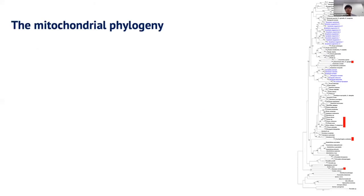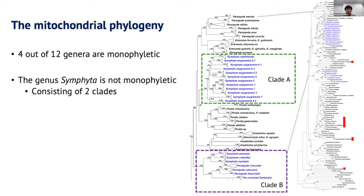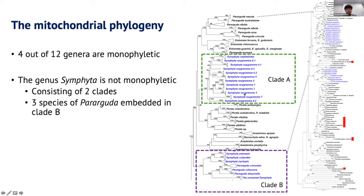This is the phylogeny of Symphita — indeed, it is a phylogeny of Australian Lassiocampidae, because I included every genus. From the tree on the right, four of 12 genera are monophyletic, as indicated by the red bars. The genus Symphita is not monophyletic, as it consists of two clades, A and B. Clade A consists of Symphita nephilodes and the Symphita oxygramma complex, which is itself not monophyletic. Clade B contains the other Symphita species, including unnamed Symphita. Interestingly, three species of the polyphyletic genus Paracuda are also embedded in clade B, as indicated by the red arrow.